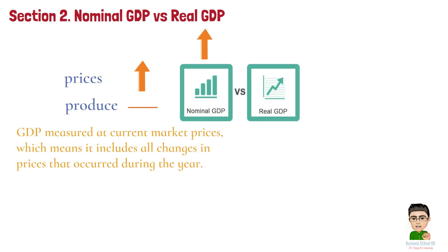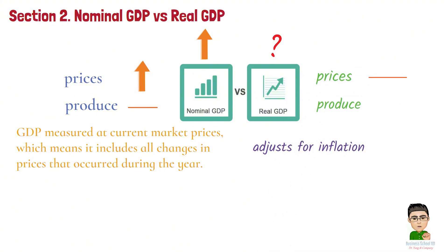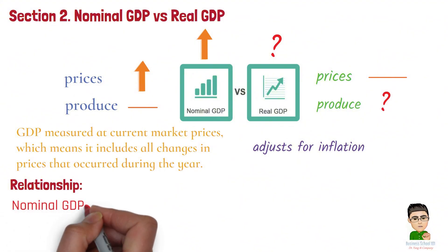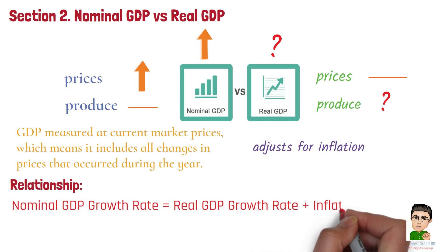Real GDP, on the other hand, adjusts for inflation. It gives us a more accurate picture of how much the economy is actually growing by keeping prices constant, so we can compare production across different time periods without price distortions. The relationship between the nominal GDP growth rate, real GDP growth rate, and the inflation rate can be described using the following formula: nominal GDP growth rate equals real GDP growth rate plus inflation rate.